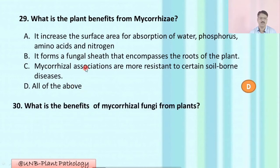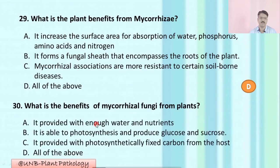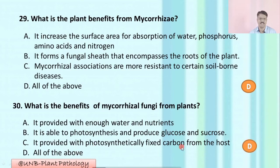Question number thirty: What are the benefits of mycorrhizae fungi from plants? A: it is provided with enough water and nutrients; B: it is able to photosynthesize and produce glucose and sucrose; C: it is provided with photosynthetically fixed carbon from the host; D: all of the above. The correct option is D: all of the above.